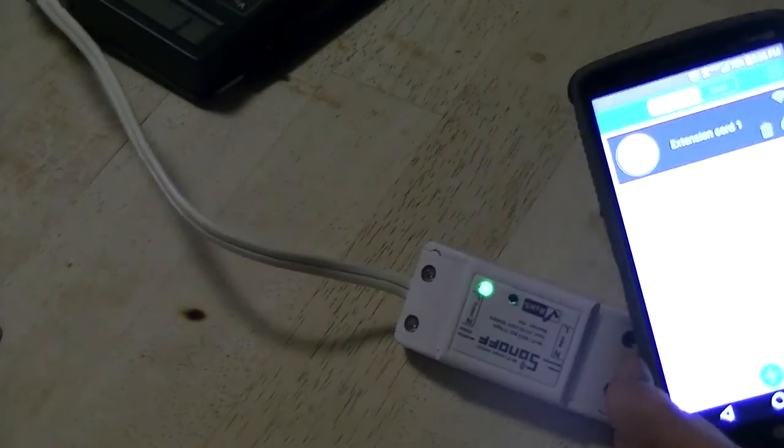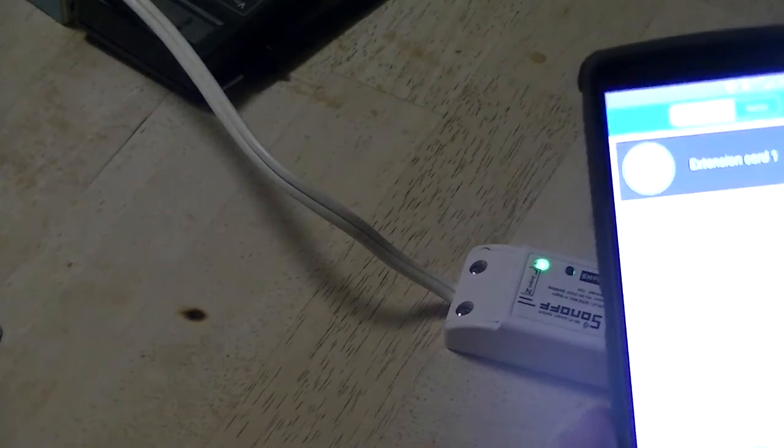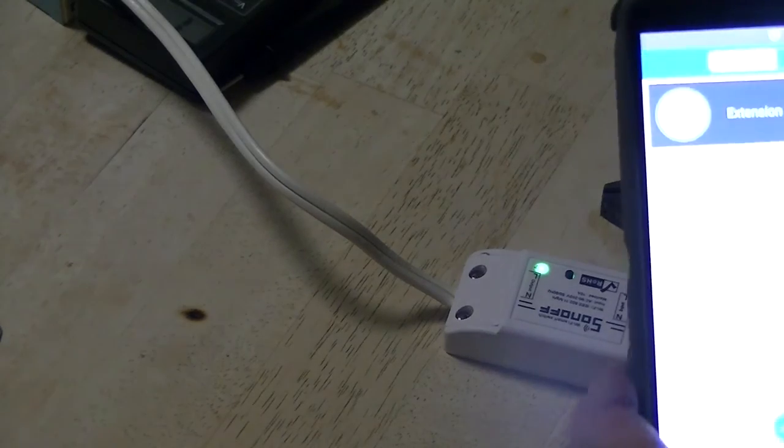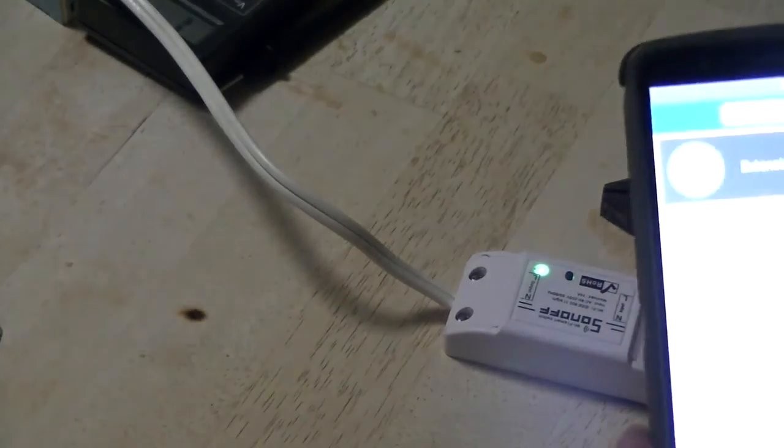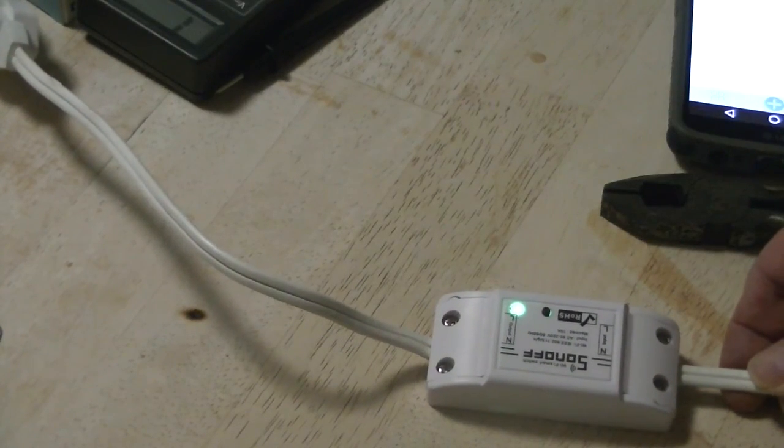Now all I got to do is attach something to this other end of it and it will be able to turn on and off. The next step is to have my Google Home Mini turn it on and off so I can say 'Google, turn the extension cord on or turn it off.' That's it, it's all done. Simple.